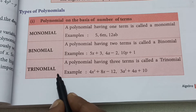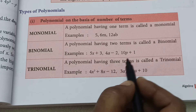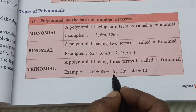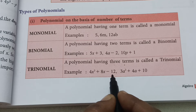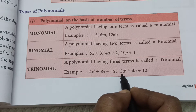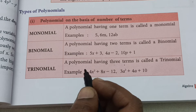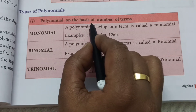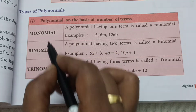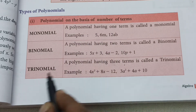The next type is a trinomial. A polynomial having three terms is called a trinomial. For example, 4X squared plus 8 minus 12 — here 4X squared is the first term, 8 is the second, and 12 is the third. Another example is 3A squared plus 4A plus 10. So: monomial has 1 term, binomial has 2 terms, and trinomial has 3 terms.